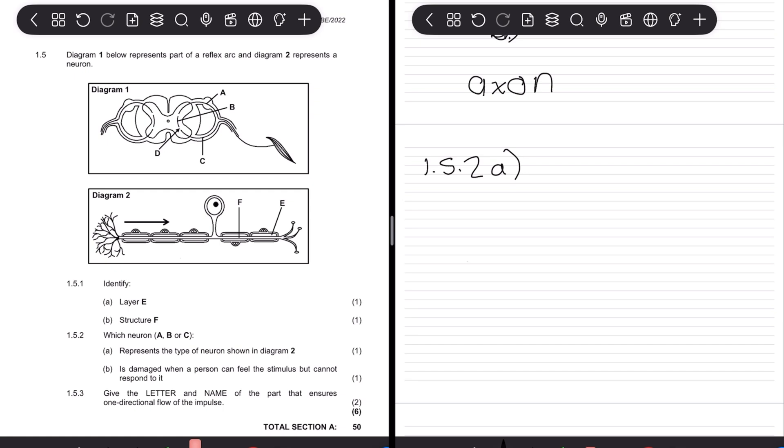Next, 1.5.2. Which structure, so now we're going back to diagram 1, represents the type of neuron shown in 2? So we know in 2 we said this was a sensory neuron because we understand that the information on the stimulus is actually processed within the body and not before or after. So our sensory neuron would be the first neuron, so you understand it would be sitting at A.